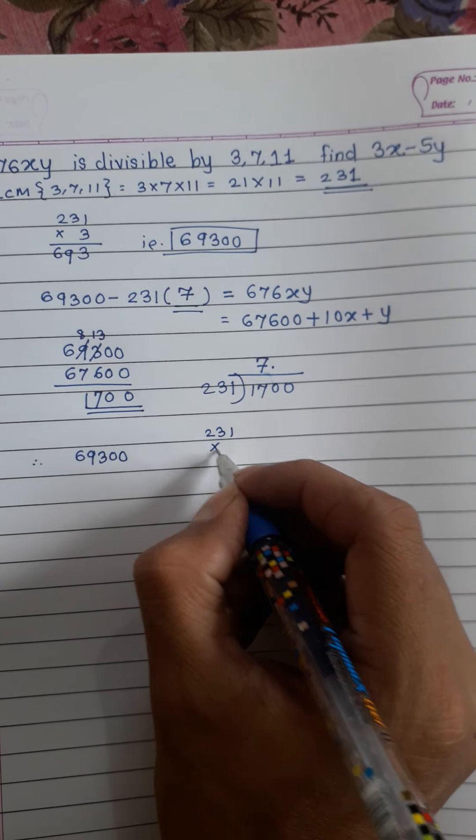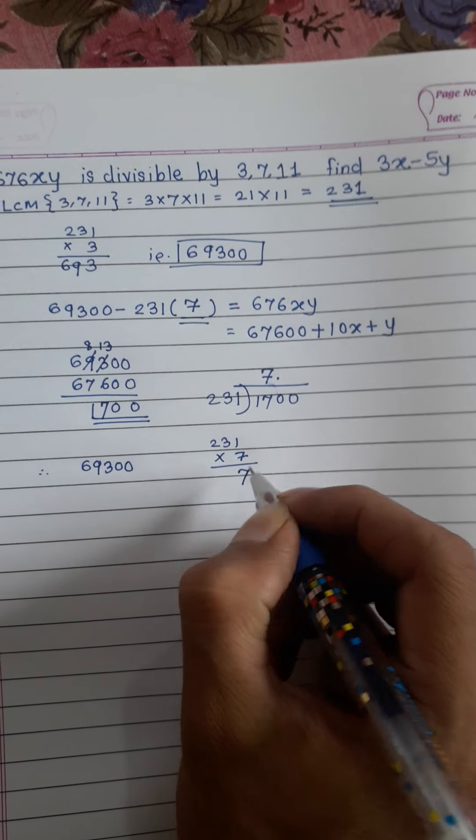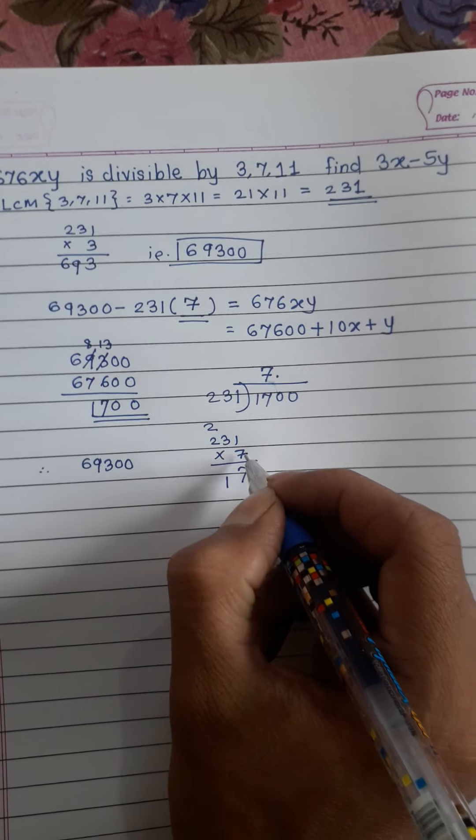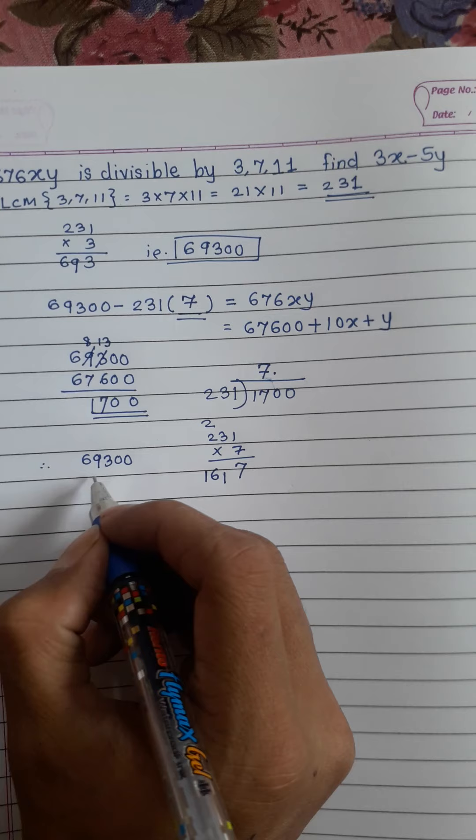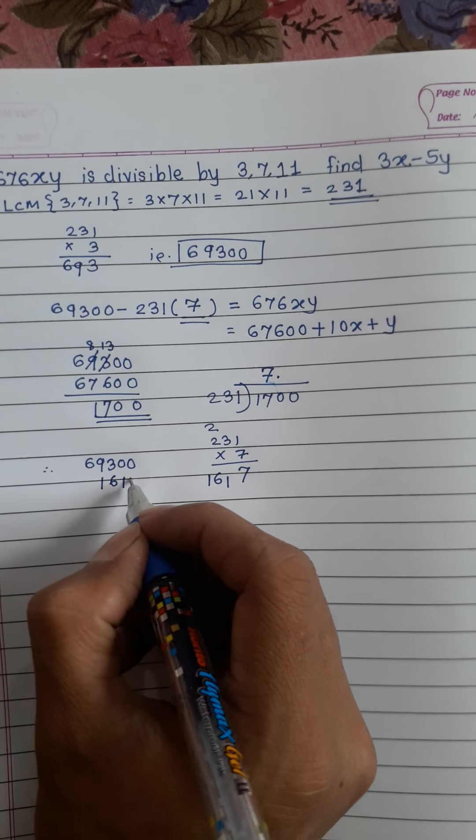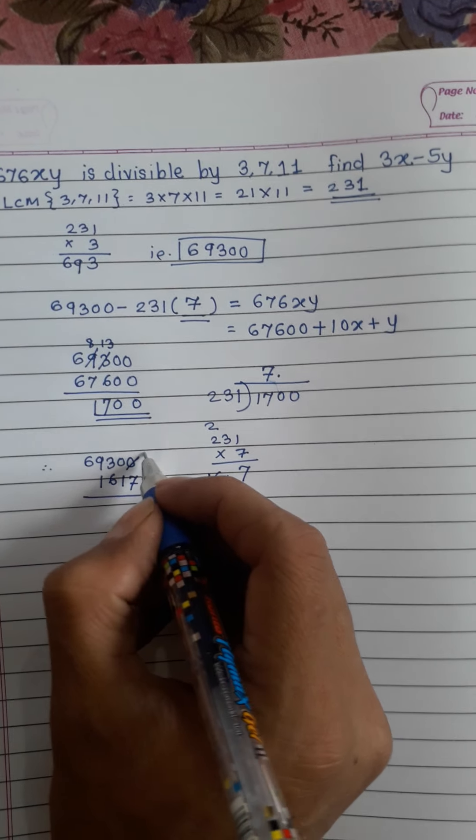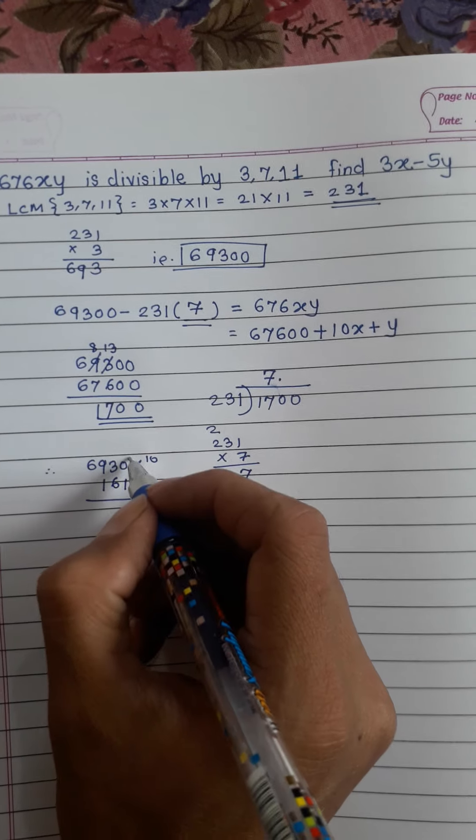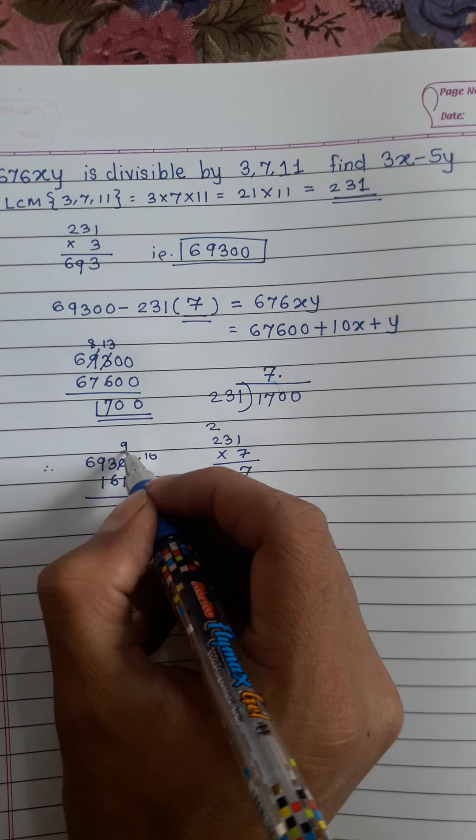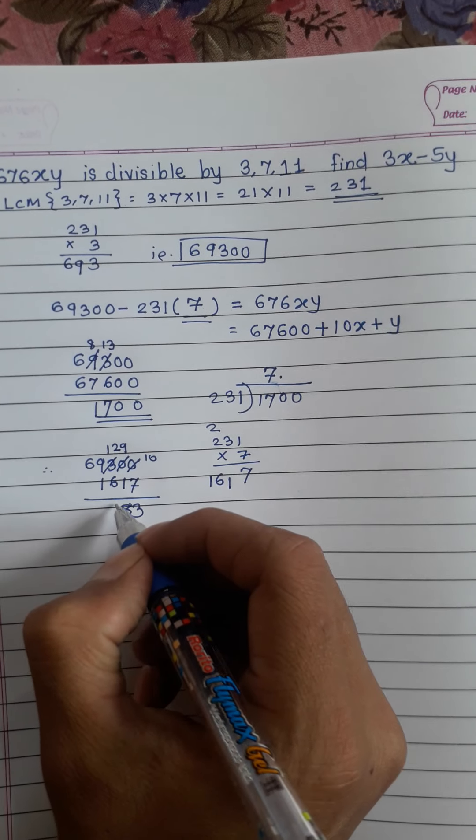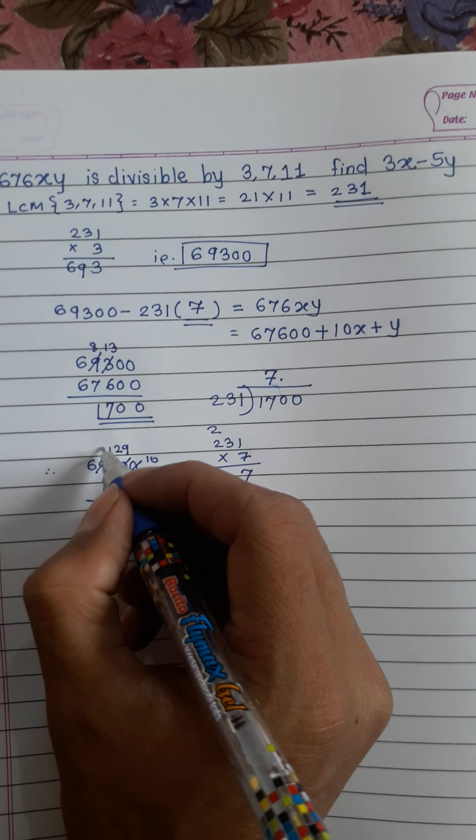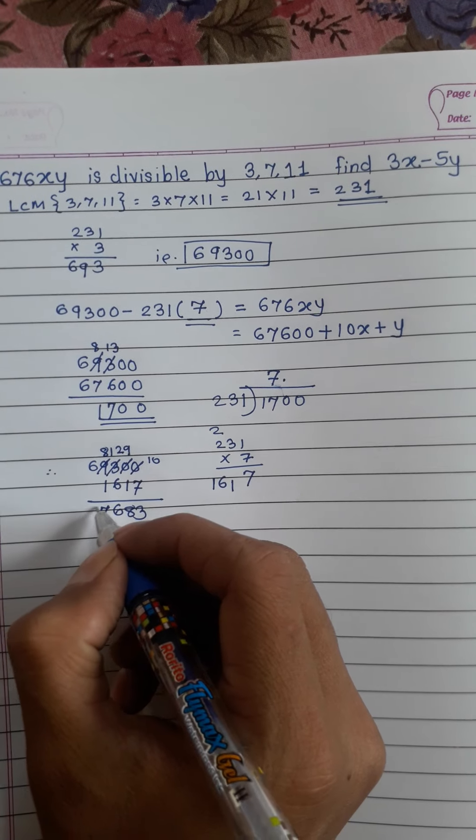231 multiply by 7 is 7, 21, 7 to the 14, 15, 16, 1 6 1 7. 10 minus 7 is 3, this is 9 minus 1 is 8, this is 12, this 6, this 8 minus 1 is 7, this will be